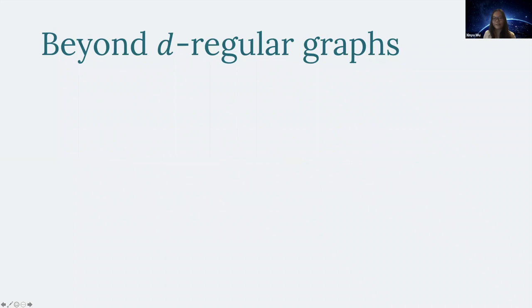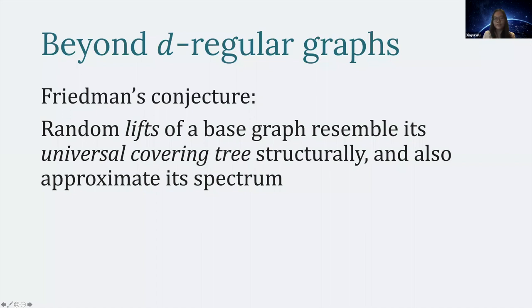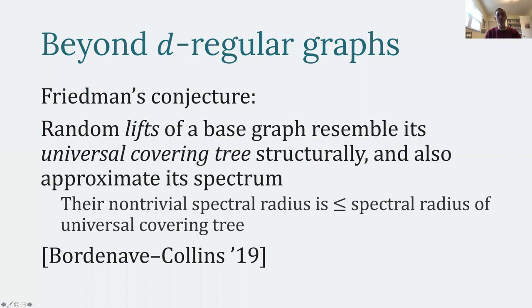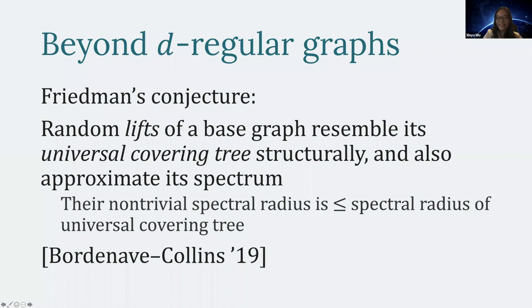This is the classical situation for d-regular graphs. The natural next question is: can we generalize beyond regular graphs? Friedman also conjectured that if you do a random lift of a base graph, the graph will locally resemble the universal covering tree of the base graph, and it also approximates the spectrum of the universal covering tree in the sense that the non-trivial spectral radius is less than the spectral radius of the universal covering tree. This was proven by Bonhoeff and Collins in a recent paper, and they prove much more than this. Our paper gives an explicit form of the Bonhoeff-Collins theorem.